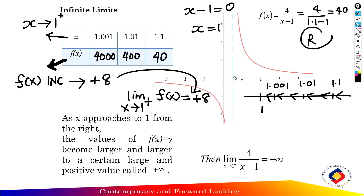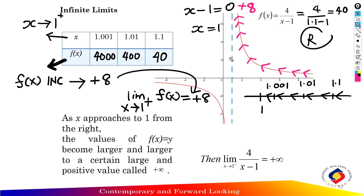Using the graphical method for the right-hand side of f(x): starting from x = 1.1, then 1.01, then 1.001, the value of f(x) increases to positive infinity. The curve is moving towards positive infinity as x approaches 1 from the right.